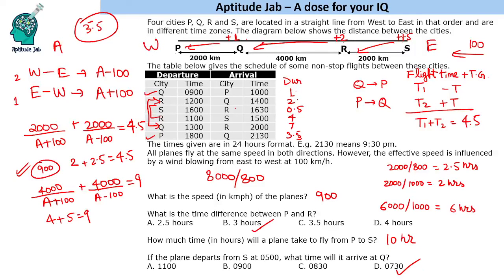In summary: when a plane flies east to west it appears to arrive early due to time zones, and flying west to east it appears to take longer. This is how time-zone-based questions are solved. This was a particularly good problem set because it combined time zones with wind speed effects.